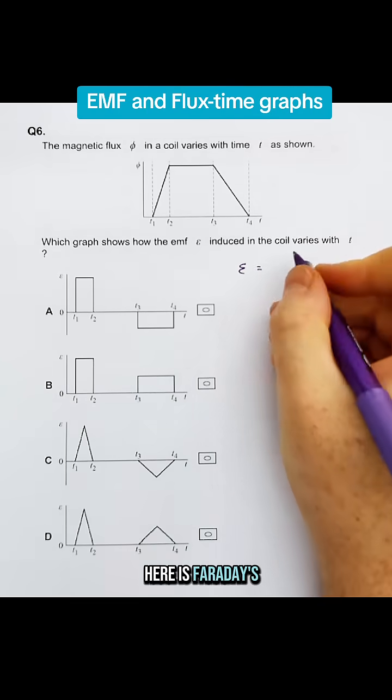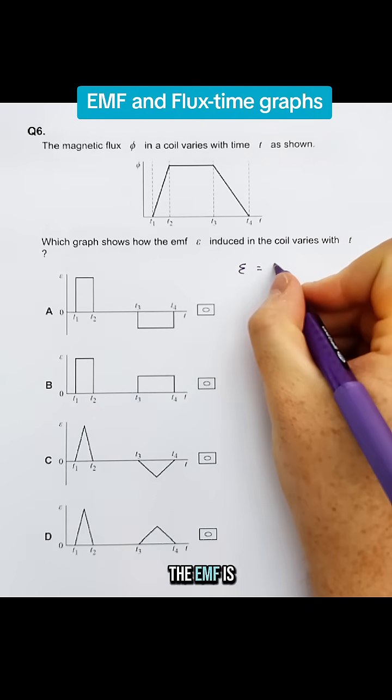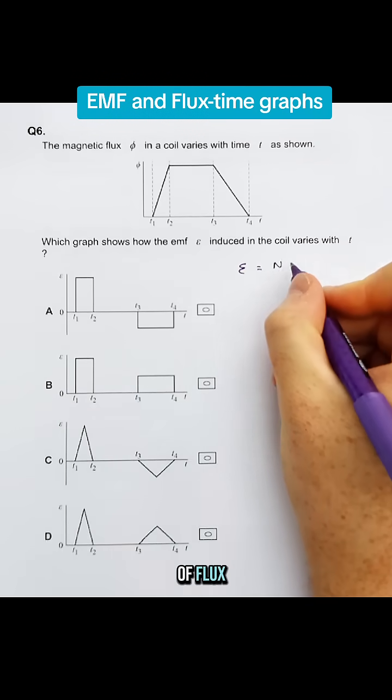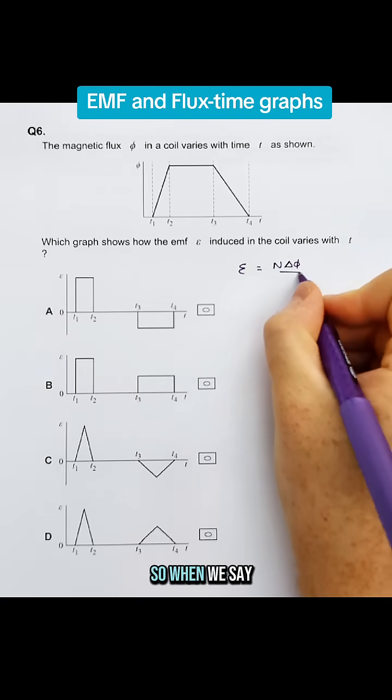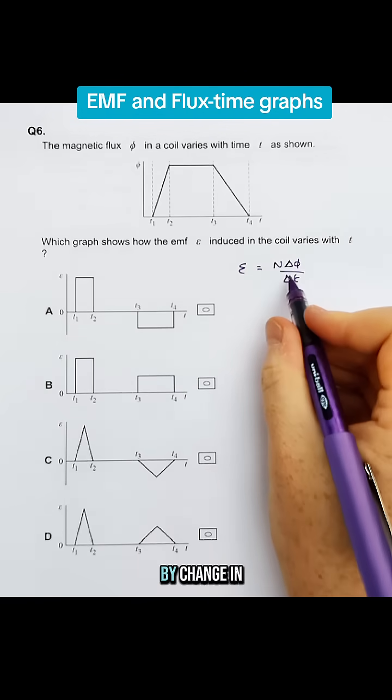So the main equation to use here is Faraday's law which states that the EMF is equal to the rate of change of flux or rate of change of flux linkage. So when we say rates, we're talking about divided by a change in time.